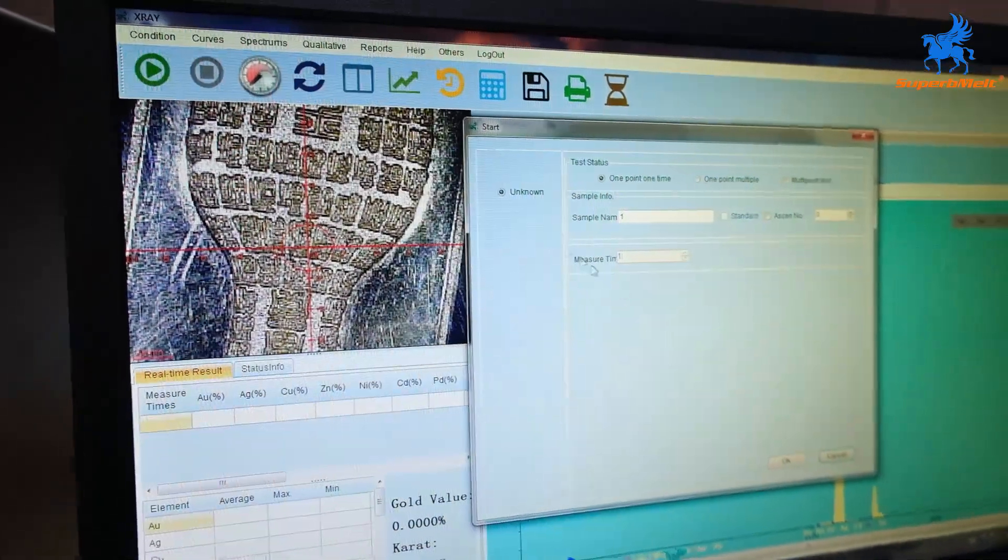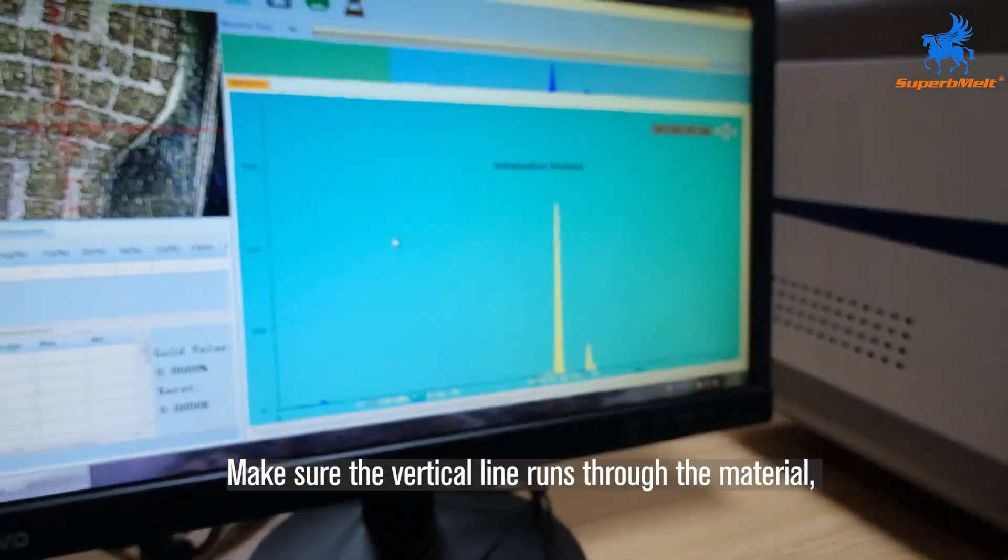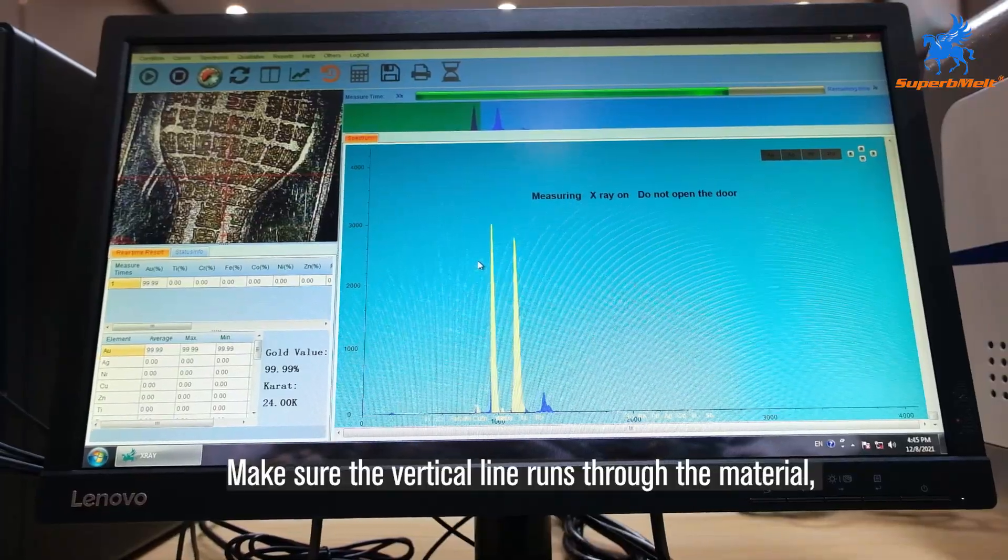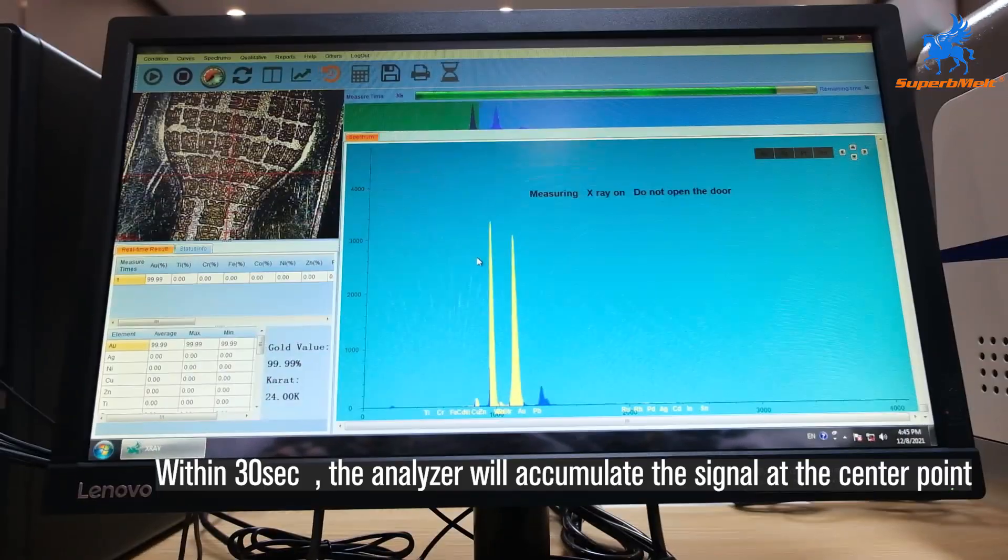Click the start icon. Make sure the vertical line runs through the material. Within 30 seconds, the analyzer will accumulate the signal at the center point.